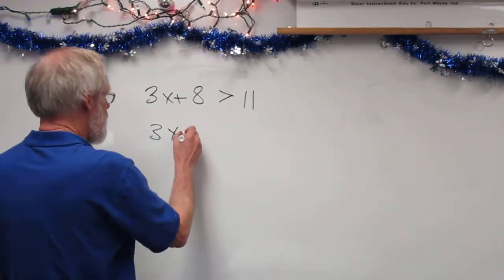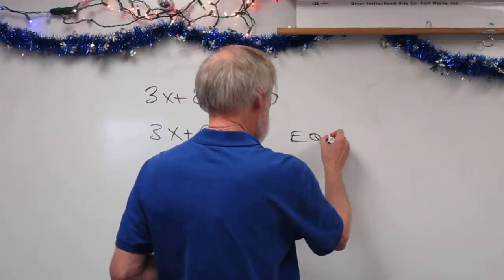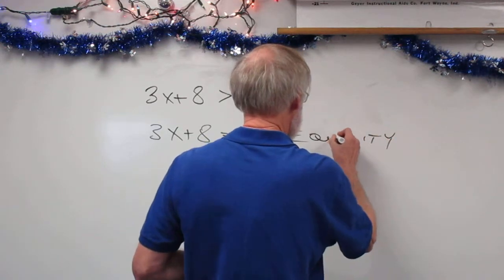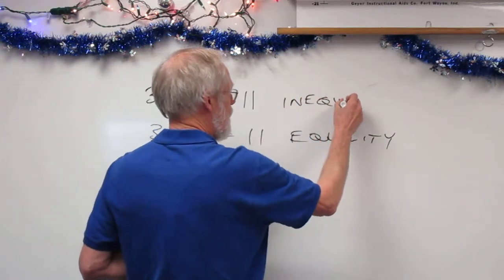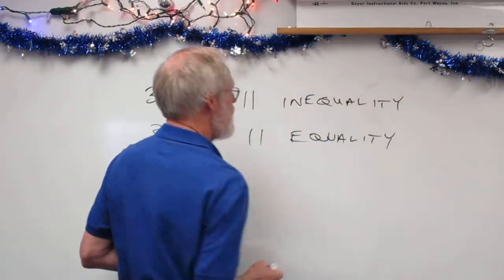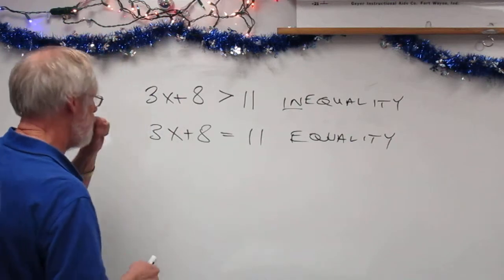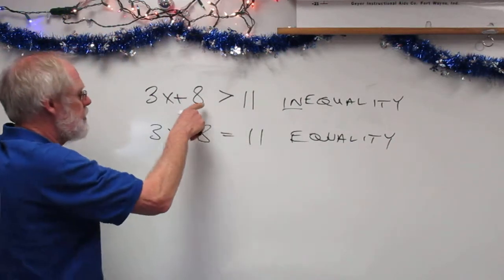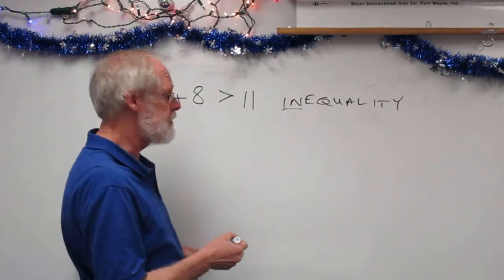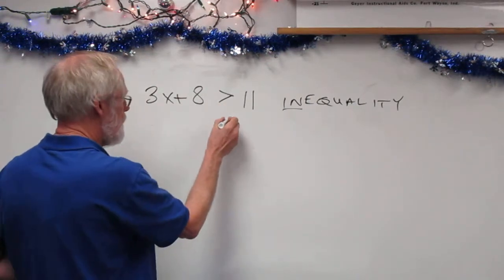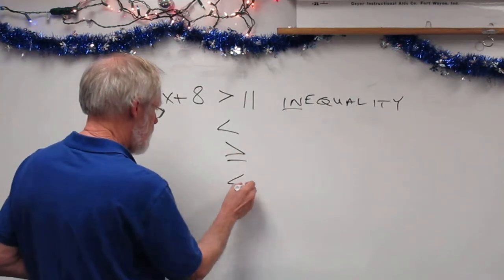If I wrote 3x plus 8 is equal to 11, that would be an equality. But what I want to do here is look at inequalities. An inequality — the prefix 'in' often means 'not' — so what we have here is not an equality. There are four different basic symbols you should know: greater than, less than, greater than or equal to, and less than or equal to.